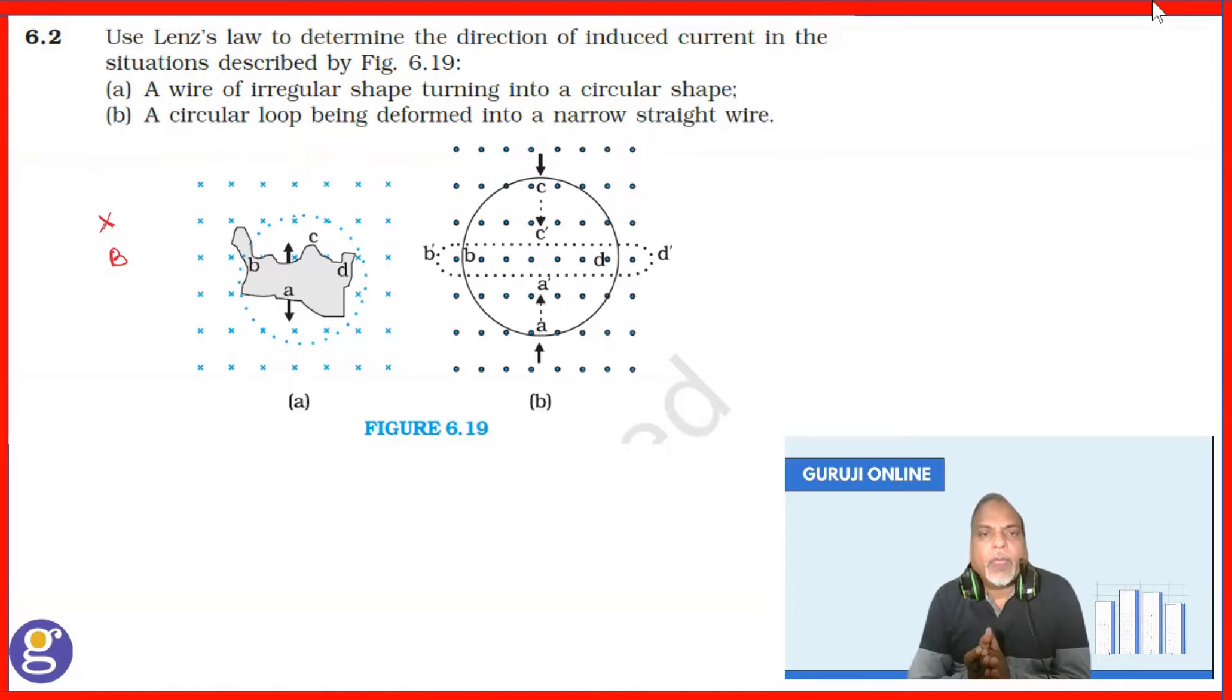there will be an induced EMF or induced current inside this coil such that the magnetic field produced by this induced current must be opposite to the initial magnetic field because it has to oppose because area is increasing, magnetic flux is increasing. That means it must produce an induced current or induced current should produce a dot magnetic field.